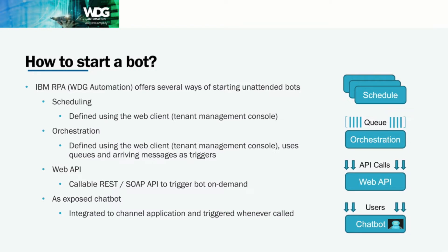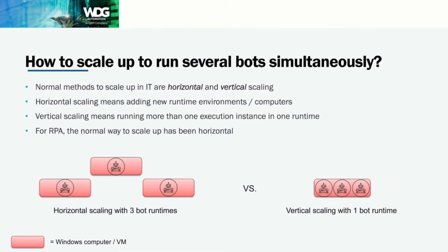We also have web API support, so whenever you need to run a bot on demand you can call the web API to trigger a specific bot. Additionally, we've included chatbot capabilities to our RPA platform, so you can directly expose your RPA automations as chatbots and integrate them into your different channel applications. Whenever a customer or internal user uses that channel application, it will also trigger a bot execution within a specific runtime environment.